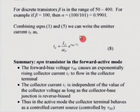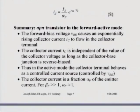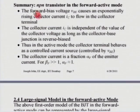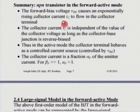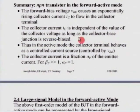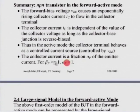To summarize: a forward bias voltage V_BE applied between the emitter and base causes an exponentially rising collector current I_C to flow in the collector terminal. The collector current I_C is independent of the value of the collector voltage as long as the collector-base junction is reverse biased. Therefore, in the active mode, the collector terminal behaves as a controlled current source, where V_BE controls the current.